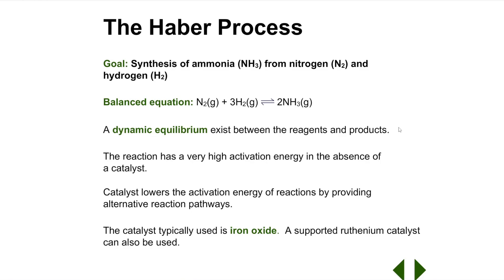The reaction between N2 and H2 is reversible. This means that both forward and reverse reactions can occur at the same time. N2 and H2 react with one another to form NH3, and NH3 decomposes — it splits — back into N2 and H2. In the Haber process, this reversible reaction occurs in a closed system, and so it reaches dynamic equilibrium. In dynamic equilibrium, both the forward and reverse reactions occur at the same rates as one another.